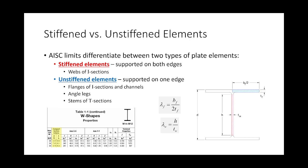For each of these, we can compute a width-to-thickness ratio. For the web, we're not taking D over TW — we're taking H over TW, where H is the height from where the web becomes flat to where it becomes flat again. For the flange, we take half the width divided by the thickness — BF over 2TF — because we're looking at the outstanding element. If you open Table 1-1 and look at the right-hand page, you'll find those values listed right there.